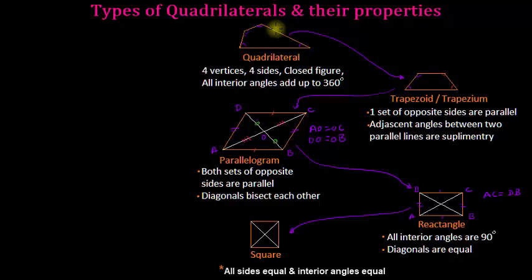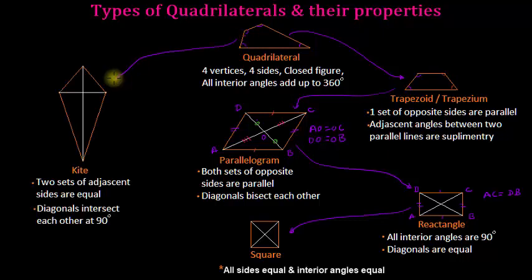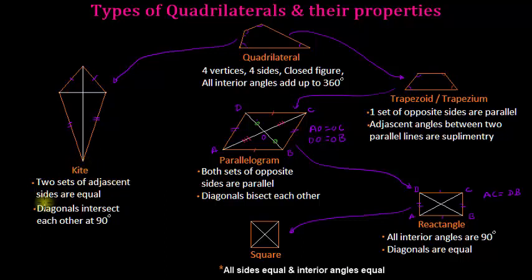Starting again from the original quadrilateral, if we make two sets of adjacent sides equal, we get a kite. The sides originating from one vertex are equal to each other, and the sides from the opposite vertex are also equal to each other. In a kite, the diagonals intersect at 90 degrees, and the shorter diagonal is bisected by the longer diagonal — each half of the shorter diagonal is equal.